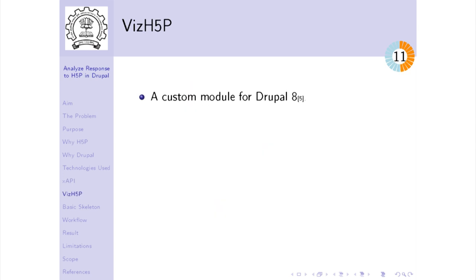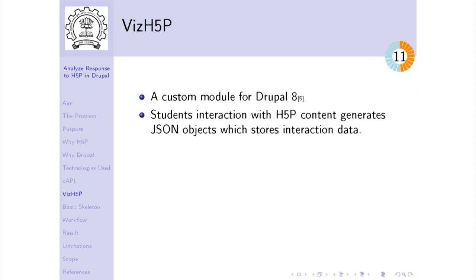Our H5P module developed for Drupal 8 captures xAPI statements, converts them into JSON objects, manipulates them, and saves them to the database. Through a form, we retrieve this data and display it in both tabular and graphical format. My friend Mayunk will show how it's done.